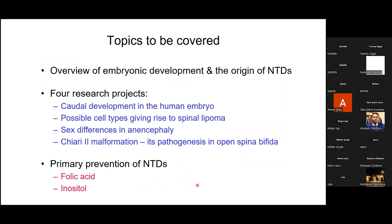In this talk I'll give an overview of embryonic development and where neural tube defects arise, then discuss four ongoing research projects in my laboratory. Finally, I'll say a little about primary prevention — the story with folic acid is very interesting, and we have a second vitamin-like substance, inositol, which has already been in clinical trial in pregnancy.